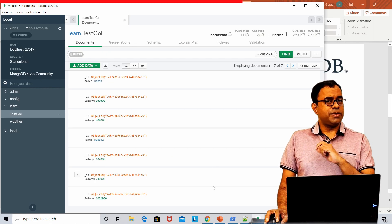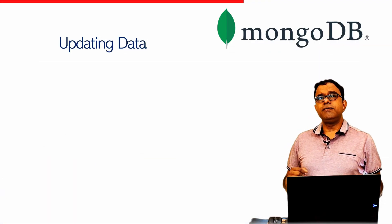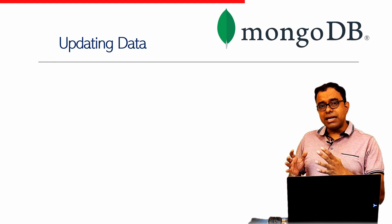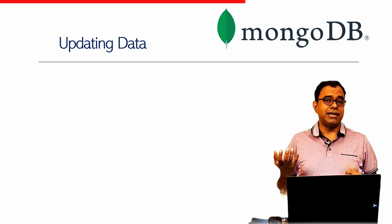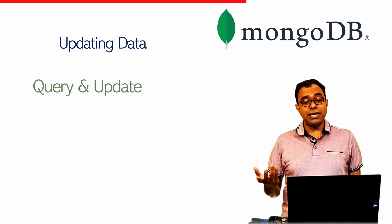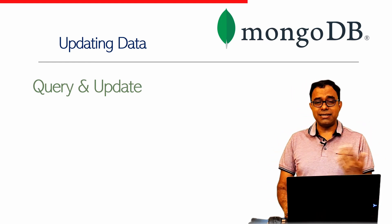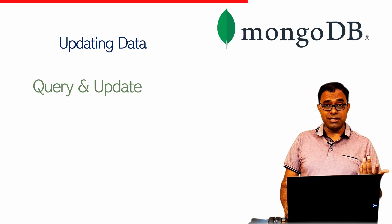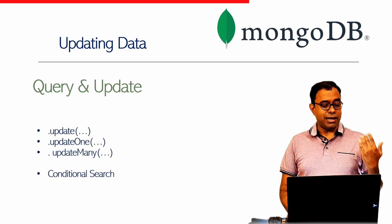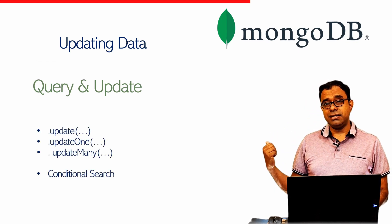Now let's talk about updating documents. When I say updating, it doesn't mean a blind update — it means query and update. If you want to create a record blindly, you can use insert, insertMany, or insertOne directly. Update means you have to query first and then update. We are going to see the update, updateOne, and updateMany APIs, plus a bit about conditional search — though I will create a separate video dedicated to that topic.